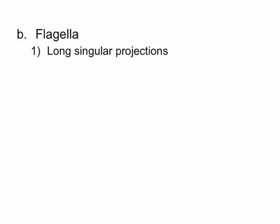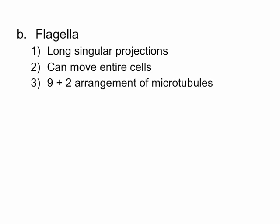Flagella is another structure reinforced via microtubules. Unlike cilia, a flagellum is usually singular — one long singular projection. The function of a flagellum is to move an entire cell. The only cells in the human body known to have flagella are sperm cells. They have what we call a 9 plus 2 arrangement of microtubules — 9 doublets or pairs around the outside, plus 2 on the inside.